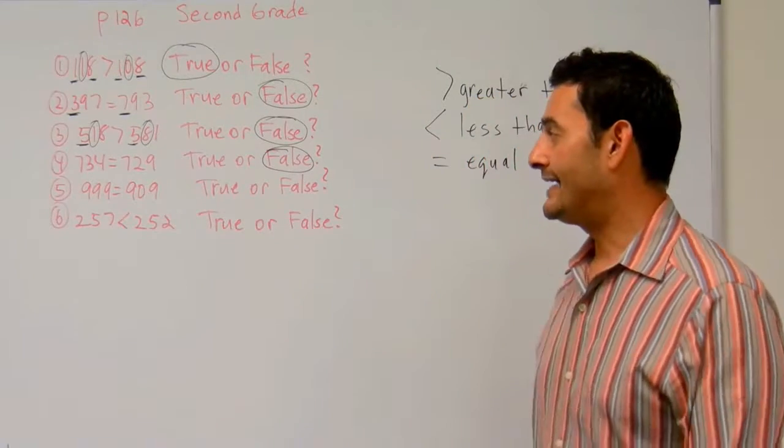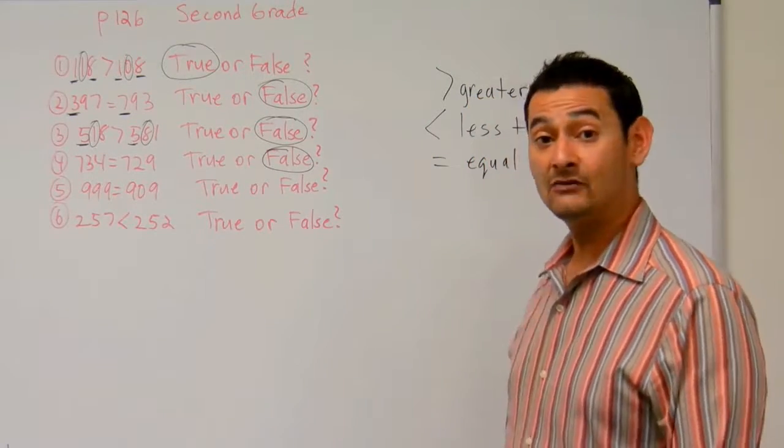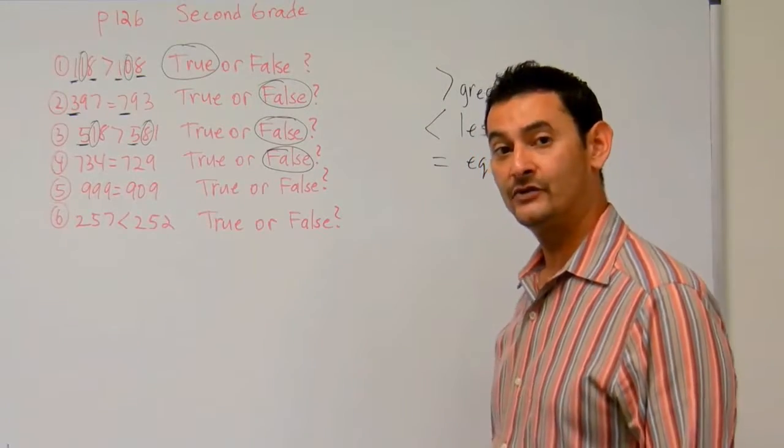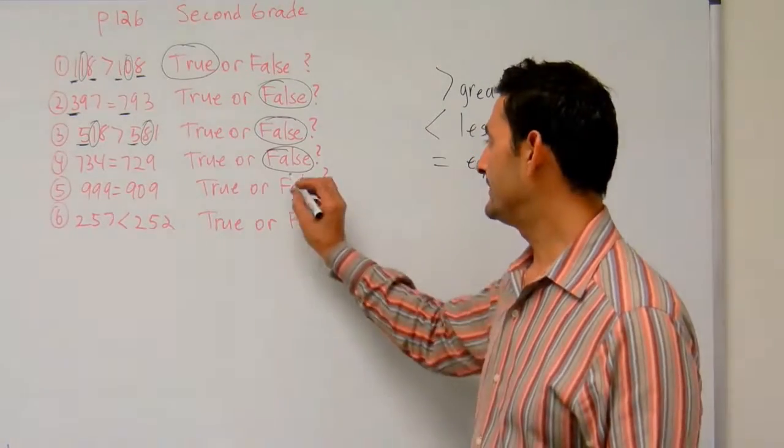Number five. We have 999 equals 909. Is that true? Those are two different numbers. That's going to be false.